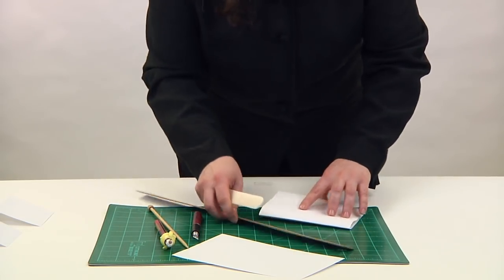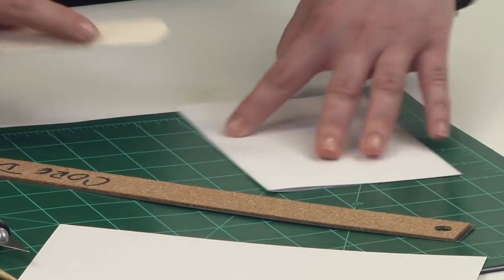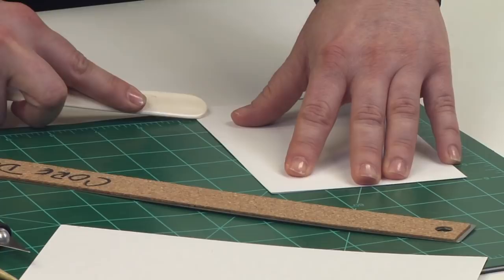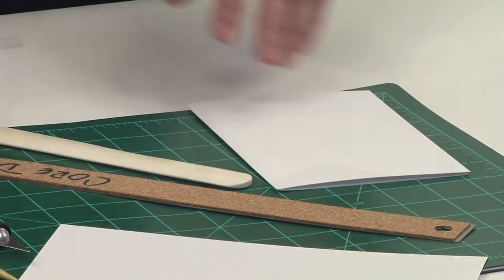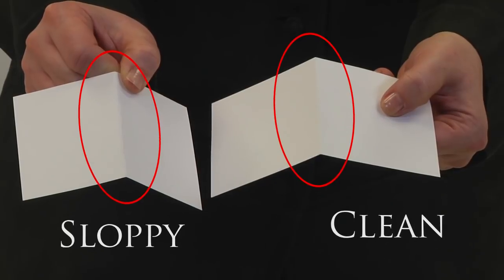Once the score is made, the paper will always have a tendency to bend in that one direction. Once creased, burnish the fold, leaving a nice crisp edge. Skipping the score and burnish steps results in folds that are wrinkled and sloppy.